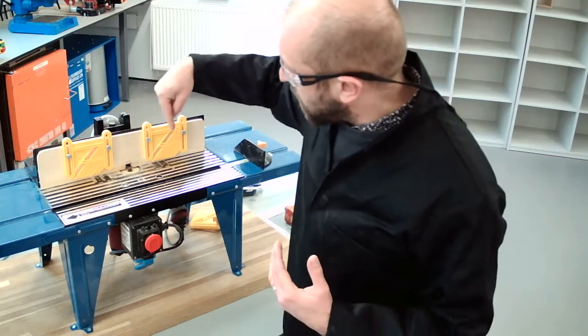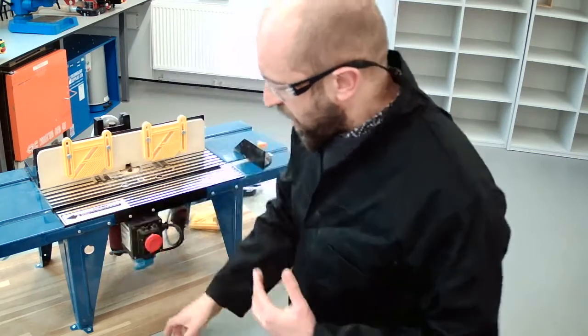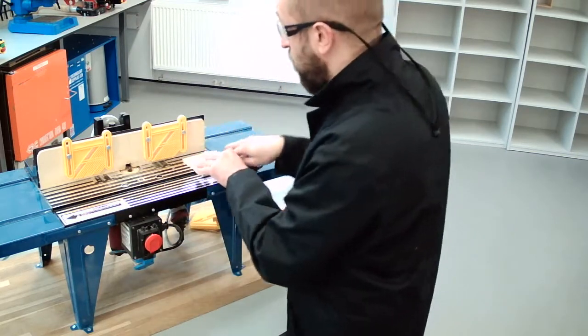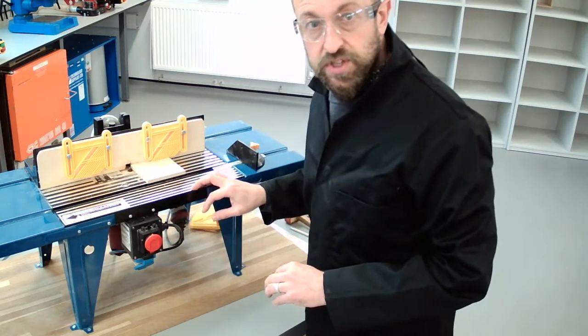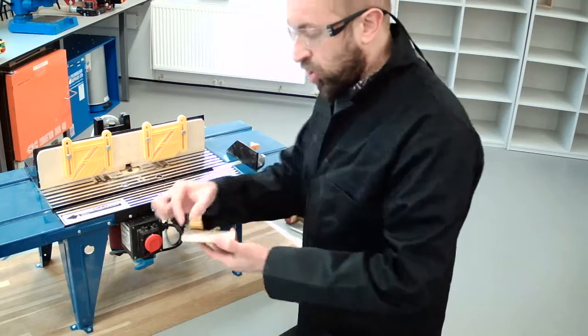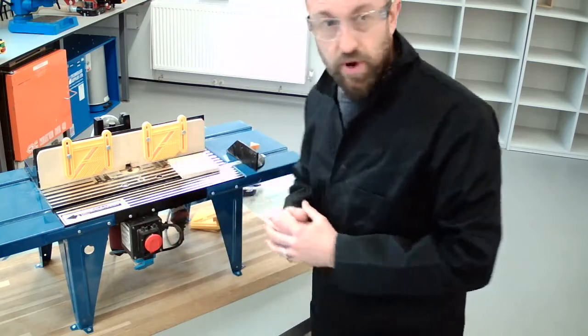So, the cutter is going to spin very, very quickly. And then what we're going to do is we're going to take our piece of material and we're going to slide it over the top of the cutter. And that will cause a cut on the underside. That's the routing operation.